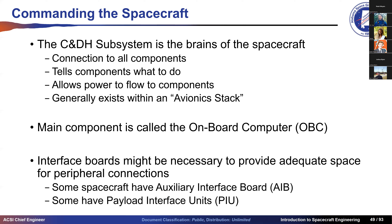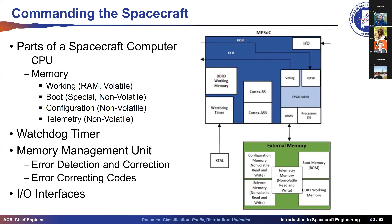Command and data handling is the brains of the satellite — controlling what information goes where, what gets turned on and off. The EPS provides power, but C&DH controls when that power is provided to each subsystem. It's generally a stack of printed circuit boards or components in their own housing purchased from a vendor. The onboard computer, or single-board computer, is the main element. Additional boards provide peripheral connectivity when the OBC doesn't have enough ports, such as payload interface boards.